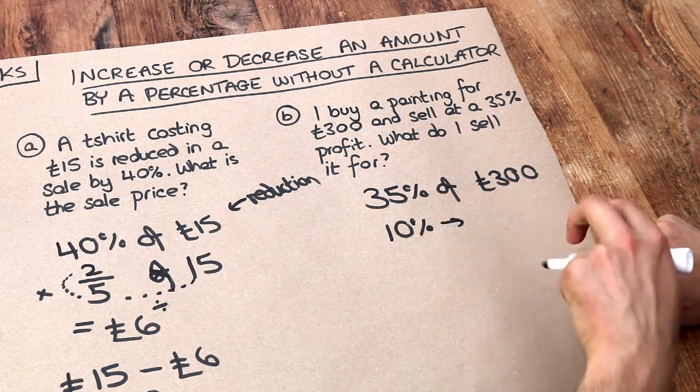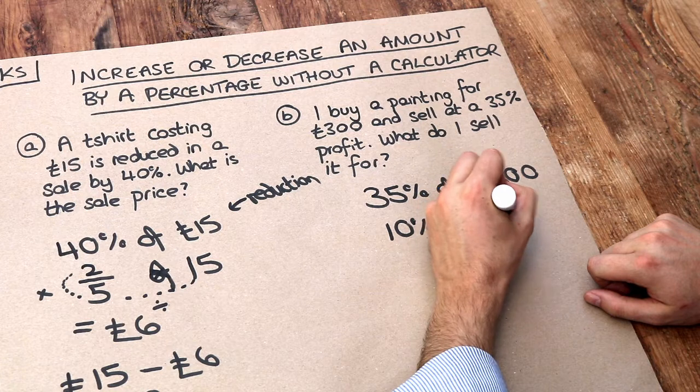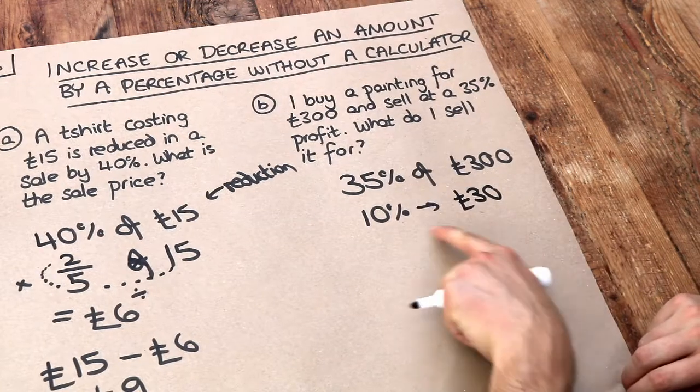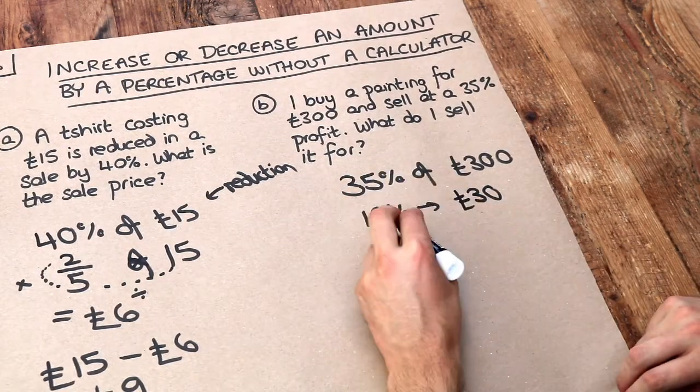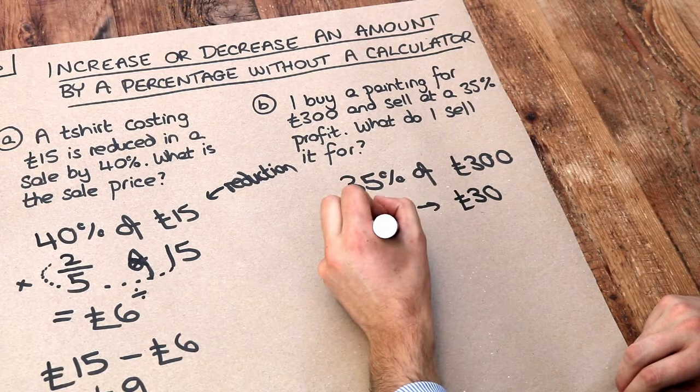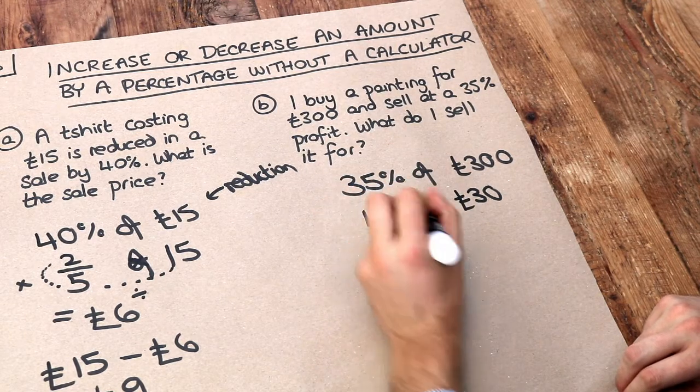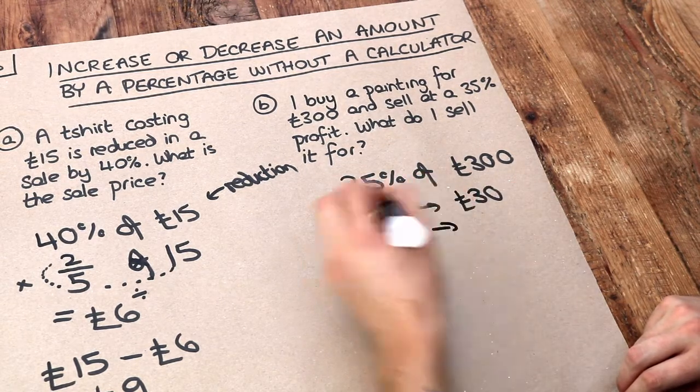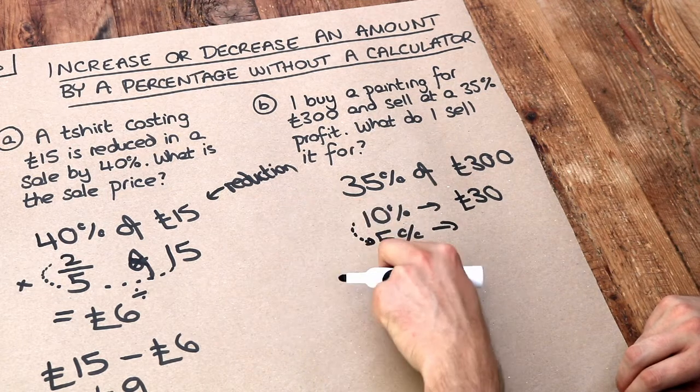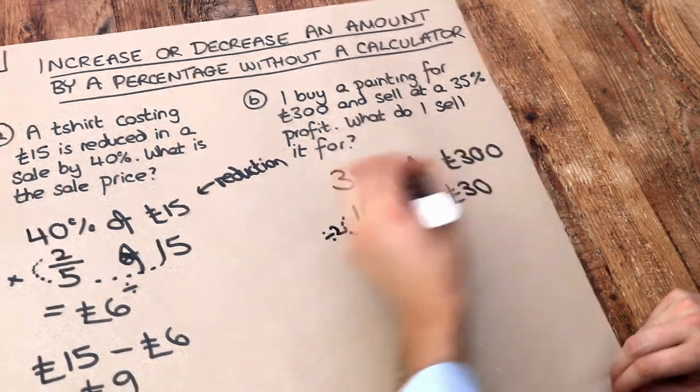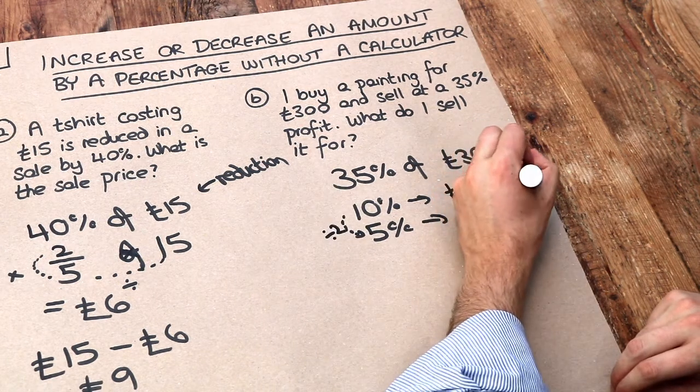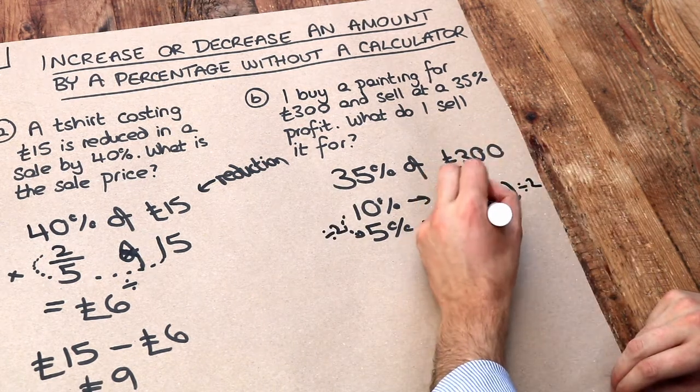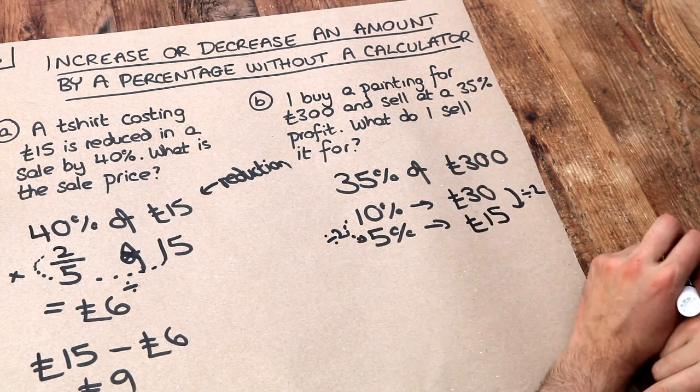And then from that we can try and make up 35%, so we need 5% to make this up. So if 10% was £30, then look, if 5 is twice as small as 10, so we're dividing by 2, then we also need to divide this by 2 and we get £15, because 30 divided by 2 is 15.